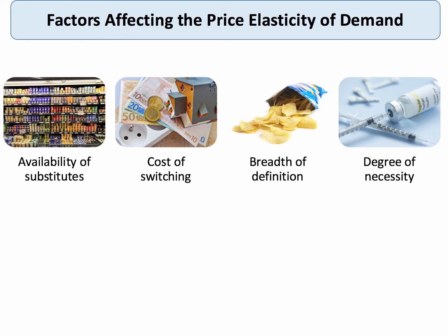A key second factor is the cost of switching. For example, if we think about utilities or electricity suppliers, there might be a cost in changing a contract or changing your mobile phone contract. So when there are costs involved in switching, demand tends to be less price elastic.